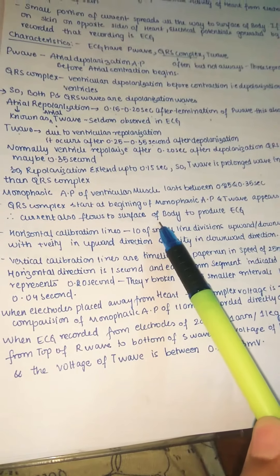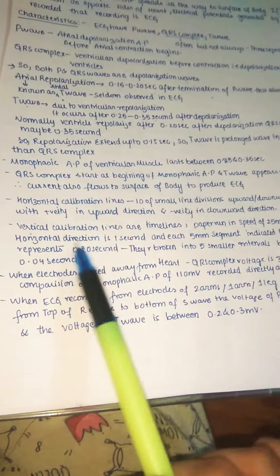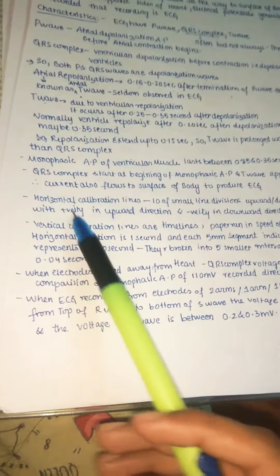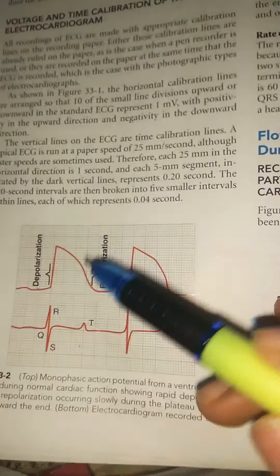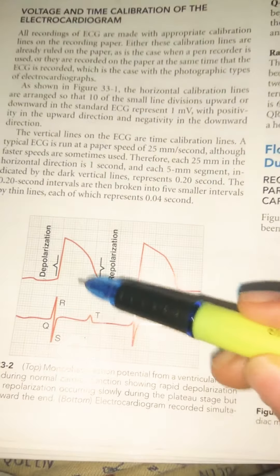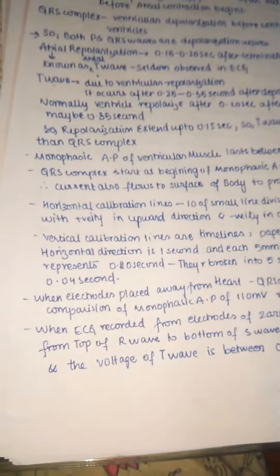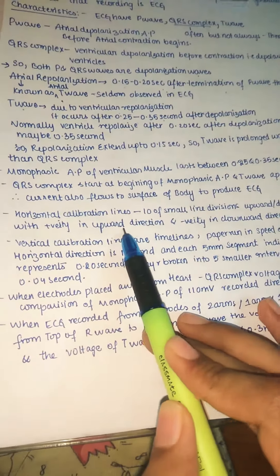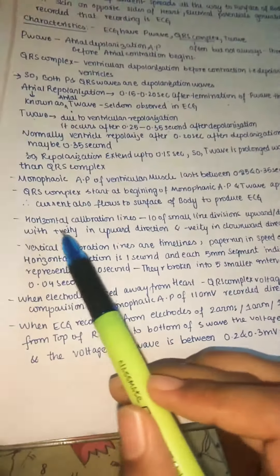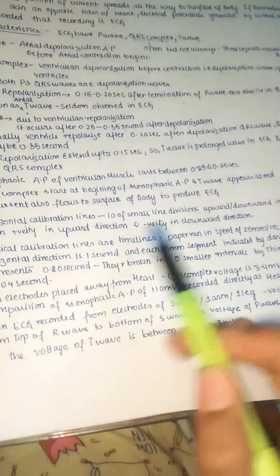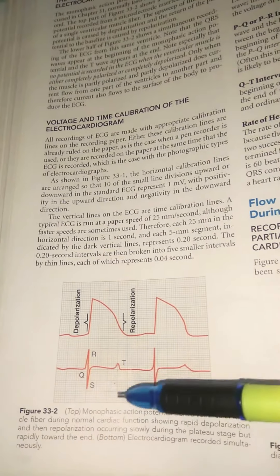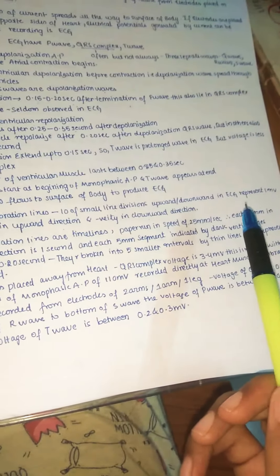The current flows to the surface of the body via body fluids to produce the ECG. Now let us observe the ECG paper. The horizontal calibration lines: there are 10 small line divisions upward or downward, representing one millivolt. Positivity is in the upward direction and negativity in the downward direction. The vertical calibration lines are the timelines representing time.